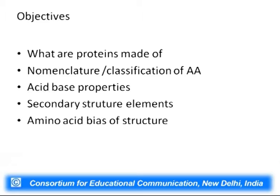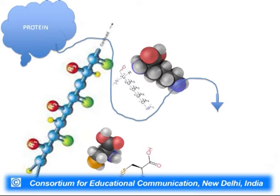The objectives for today's lecture are: what are proteins made of, what is the nomenclature and classification of amino acids, what are the acid-base properties by virtue of the functional groups in the amino acids, and what are the propensities of amino acids that lead them to prefer certain secondary structures, namely beta sheets, alpha helices, and turns.